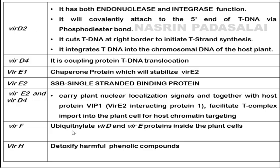VirD4 is a coupling protein that works together with the VirB operon to help form the Type 4 Secretion System. VirD4 also combines with VirE2 — both VirE2 and VirD4 carry a plant nuclear localization signal. They interact with a host protein in the plant genome called VIPP (VirE2-Interacting Protein), facilitating import of the T-complex into the plant cell for nuclear targeting.